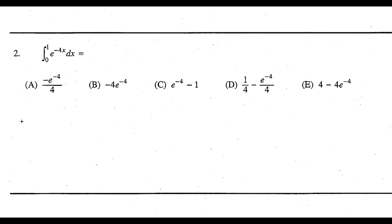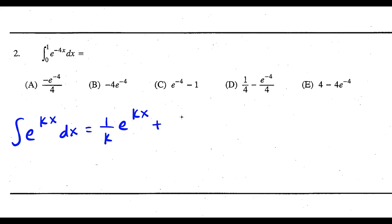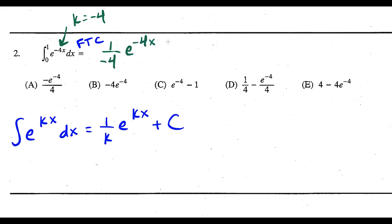For question 2 we can do a u-substitution, but it really helps to have this formula for the AP test. When you have e to a constant times x dx, you can skip the u-sub process and just write 1 over the constant times e to the constant times x. If this was an indefinite integral we would have to write plus c. But this is a definite integral, so we use the fundamental theorem of calculus. Here k is equal to negative 4.